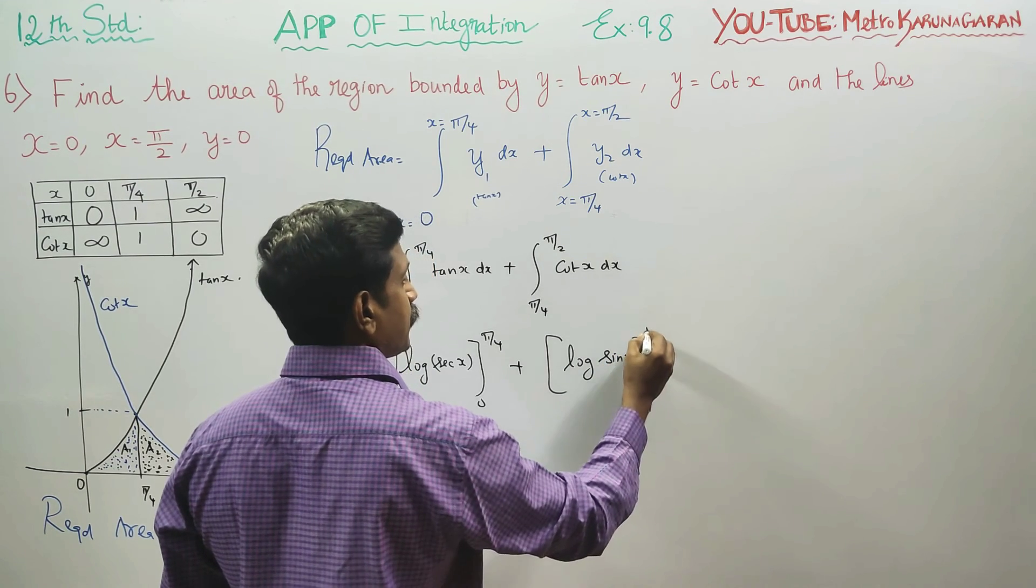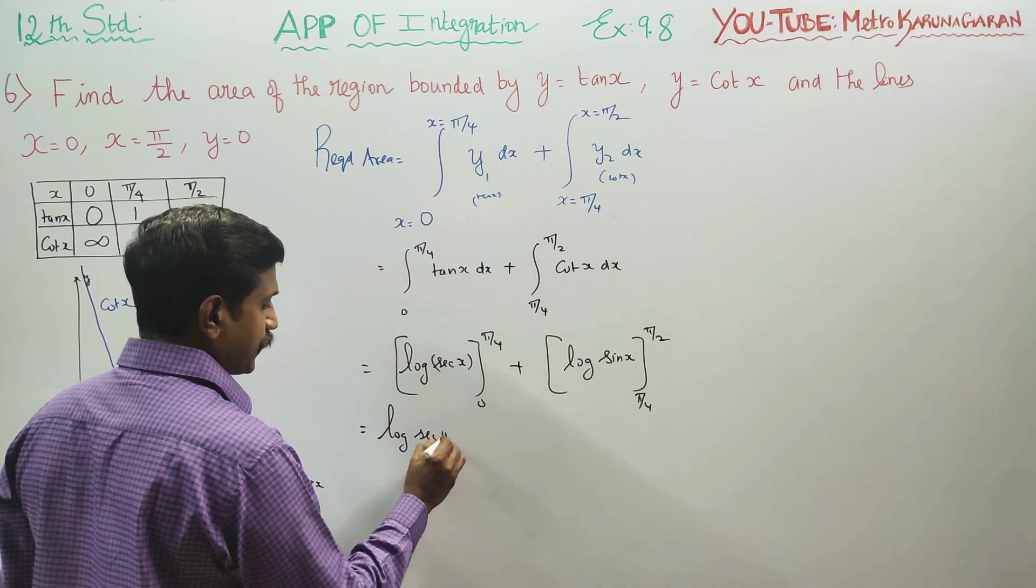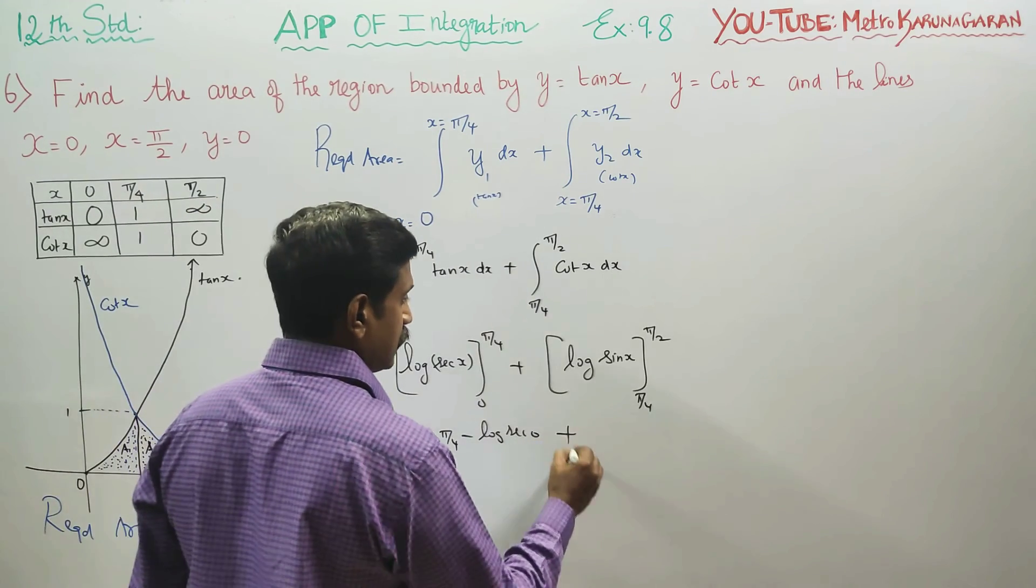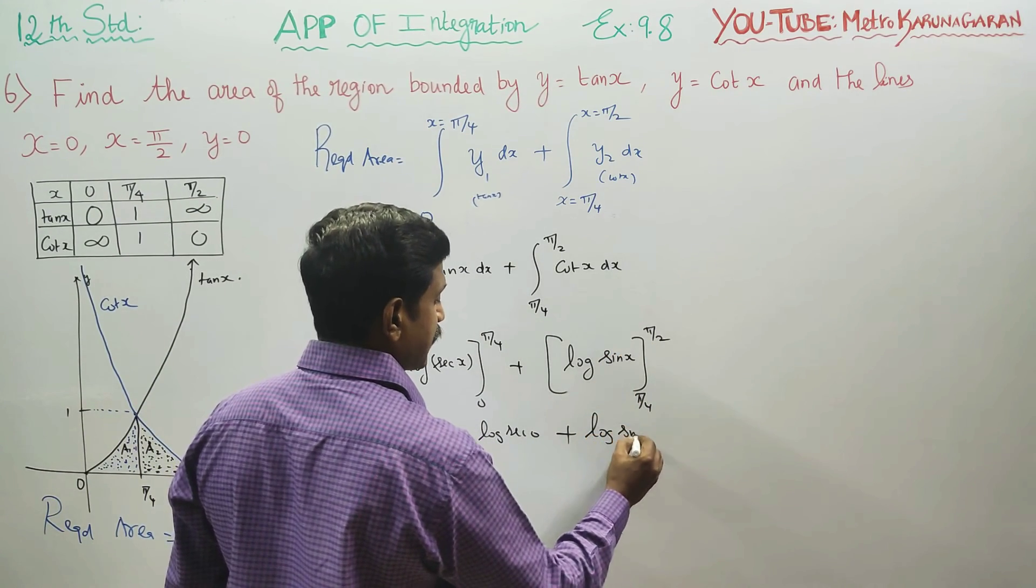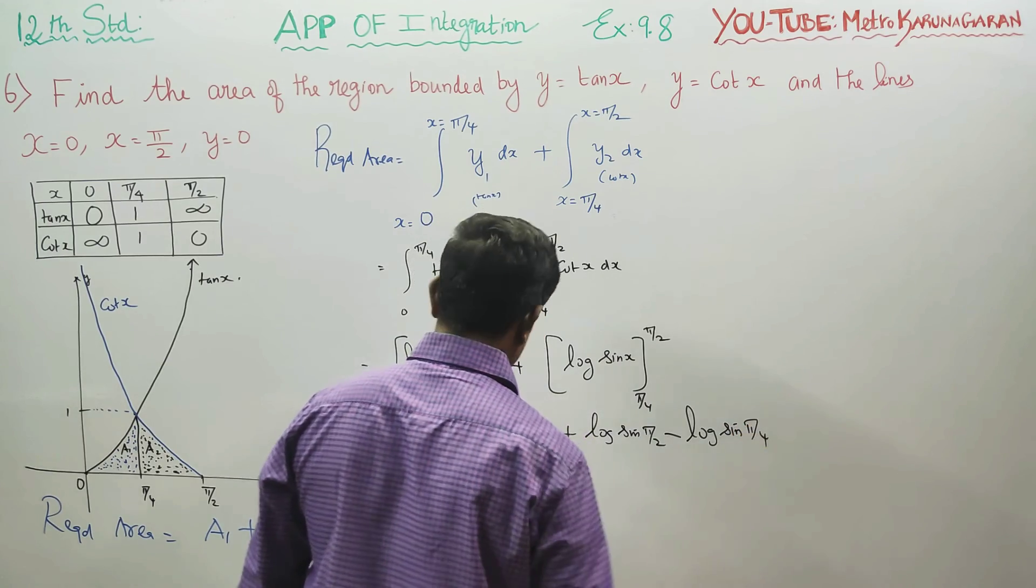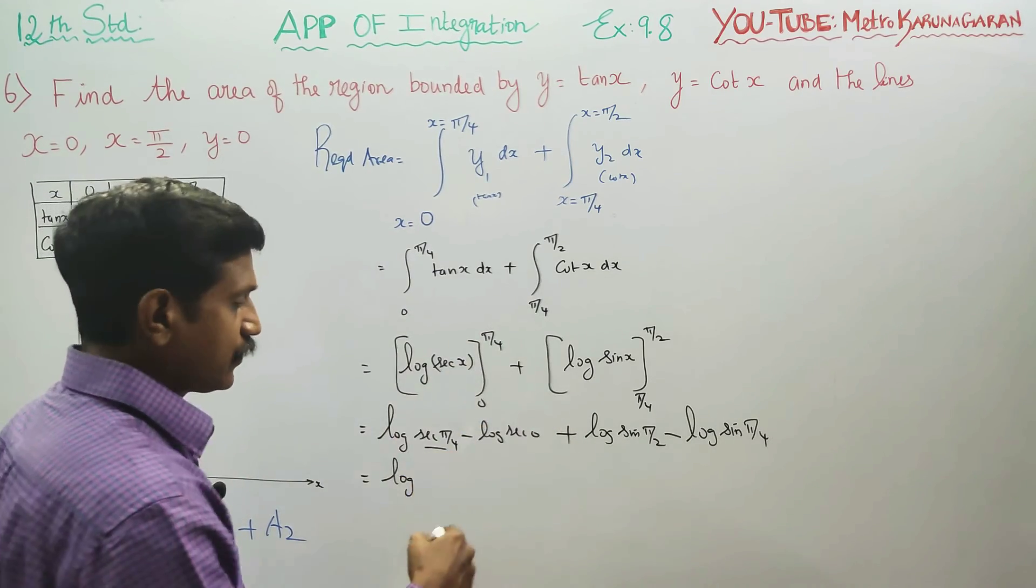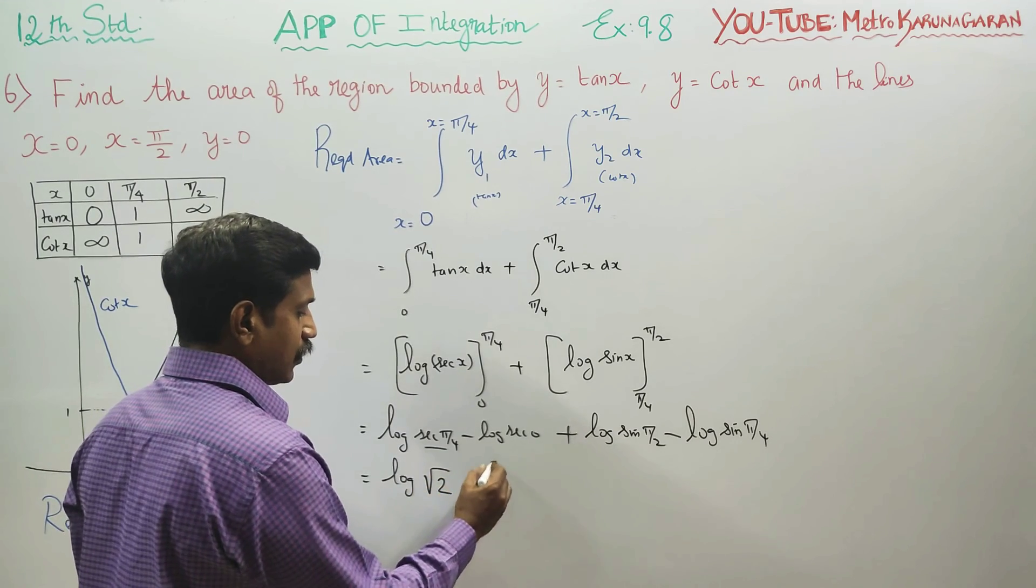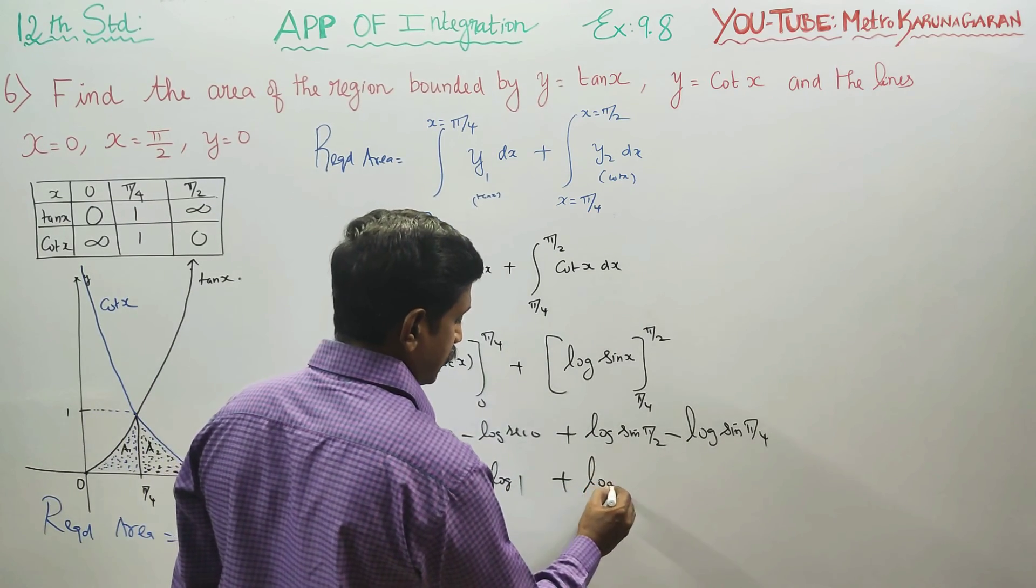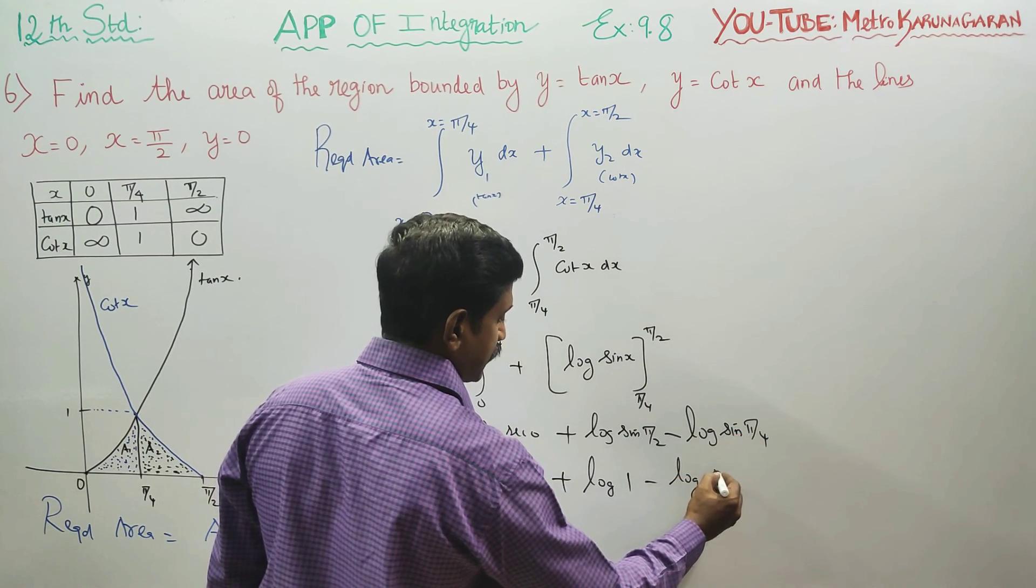Substituting limits: logarithm of secant pi by 4 minus logarithm of secant 0, plus logarithm of sin pi by 2 minus logarithm of sin pi by 4. Secant 45 is root 2, secant 0 is 1, sin 90 is 1, sin 45 is 1 by root 2.